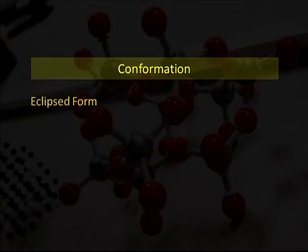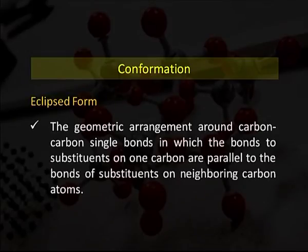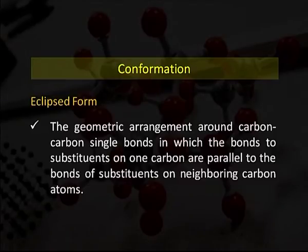Now we will look at the eclipsed form. In this form, the geometrical arrangement around the carbon-carbon single bond is one in which the bonds to substituents on one carbon are parallel to the bonds to substituents on the neighboring carbon atom — this is known as the eclipsed form. When these substituent hydrogen atoms eclipse each other, viewing from the front we see only the front atoms, with the rear ones hidden behind; so this is known as the eclipsed form.